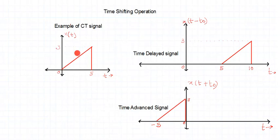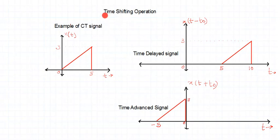What changes is the time position. In the original signal, it was from 0 to 5. When shifted to the right, the new time period is 5 to 10. When shifted to the left, the new time period is minus 5 to 0. Time shifting means shifting the signal with respect to time — either right or left — while maintaining its shape and amplitude.